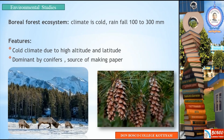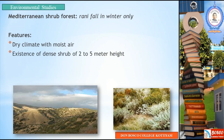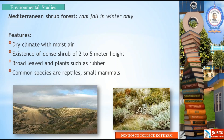The features of Mediterranean Shrub Forest include a dry climate with moist air. There is an existence of dense shrub of 2 to 5 meters in height. It has broad-leaved plants such as rubber. Common species are reptiles and small mammals.